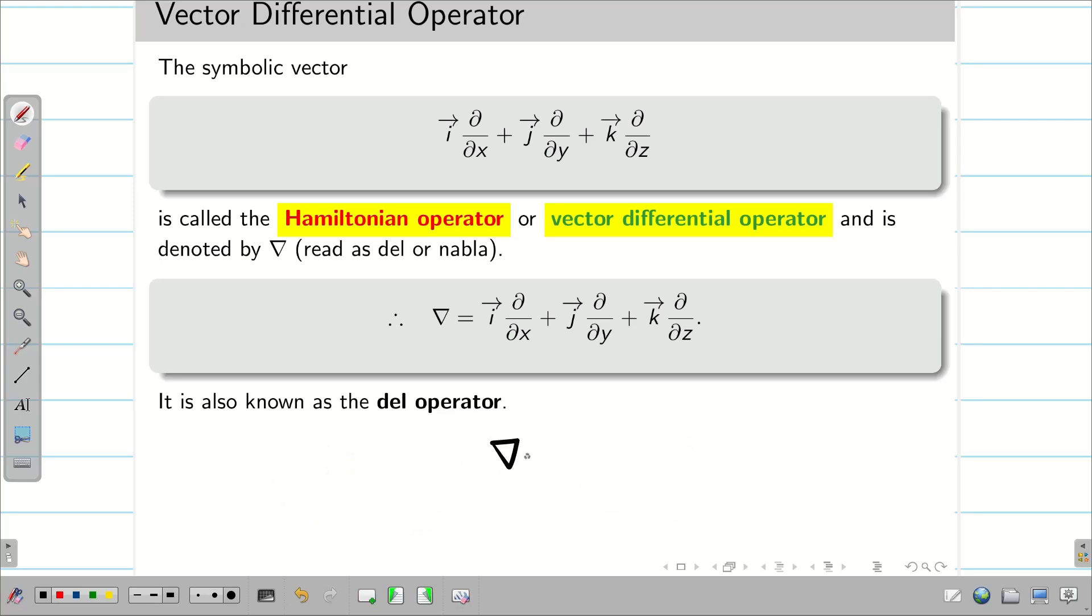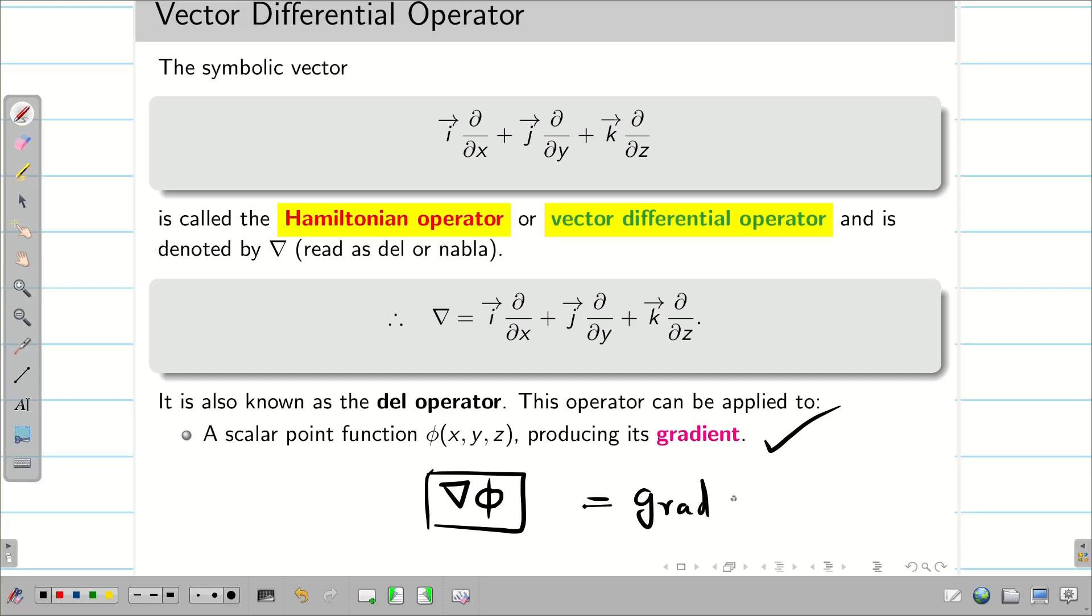With this del, this is going to be a vector point function. I can multiply a scalar. This is the first thing I can do. It is known as gradient. Multiplying a scalar point function with del will give you gradient. It is known as del phi or grad phi or gradient phi.